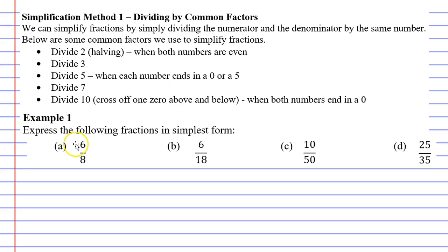Starting with question A, 6 over 8, you'll notice that both of these numbers are even. If I read up above, it says here that if both numbers are even, we should try dividing by 2. Let's do that. Let's divide the top and the bottom by 2. 6 divide 2 is 3, and 8 divide 2 is 4.